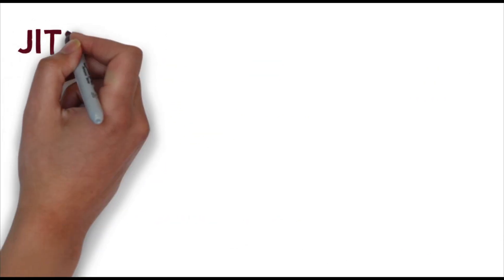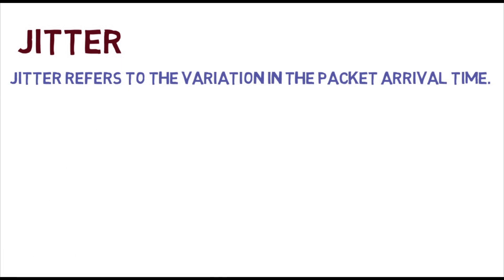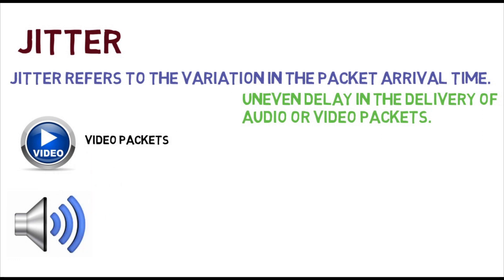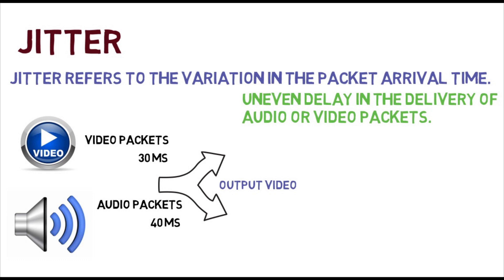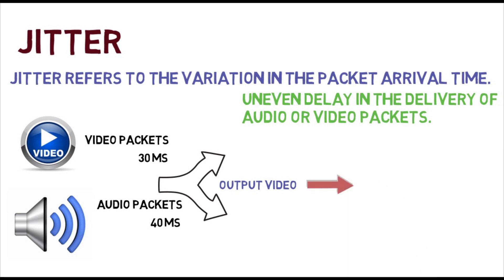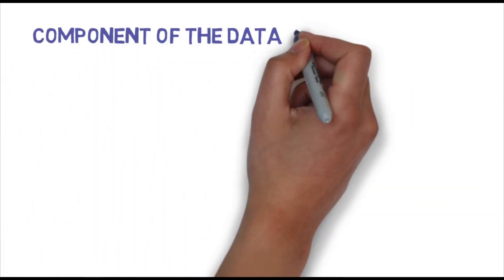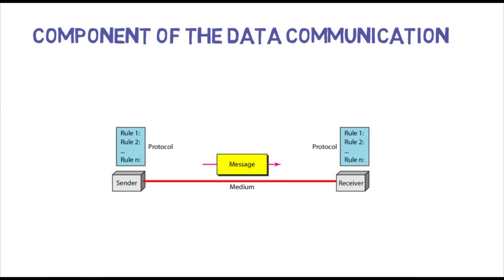Jitter: jitter refers to the variation in the packet arrival time. It is the uneven delay in the delivery of audio or video packets. For example, if video packets are sent every 30ms, and some packets arrive with a 30ms delay while others arrive with a 40ms delay, an uneven quality in the video is the result.